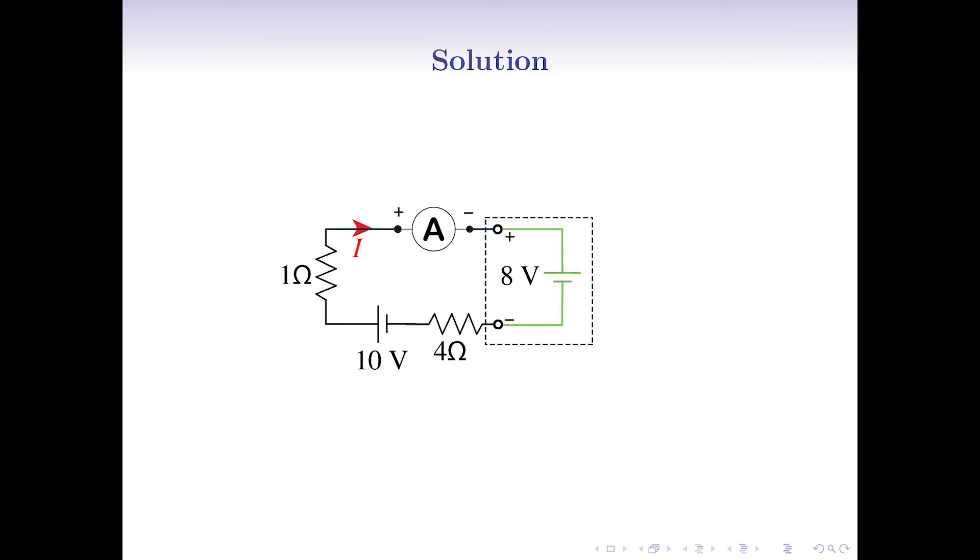Now, we see a series connection between two sources of voltage with opposite polarity or current injection direction. So, they can be merged into one with 10 minus 8 volts.